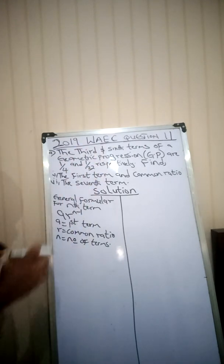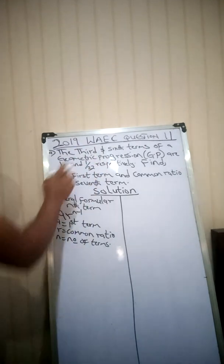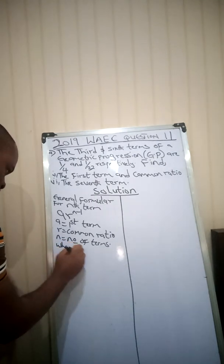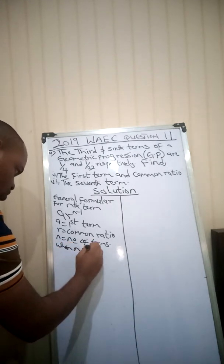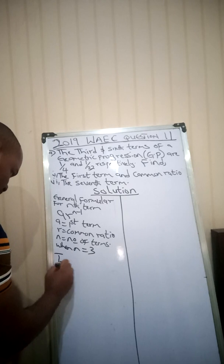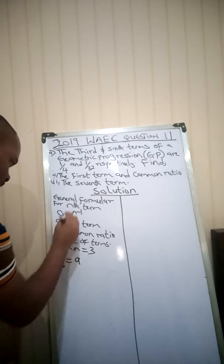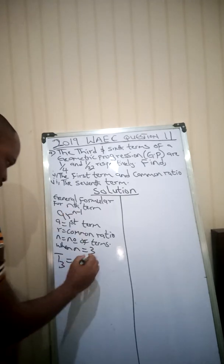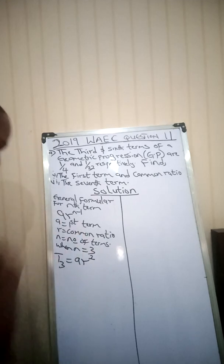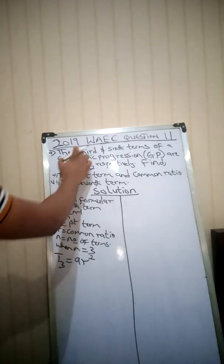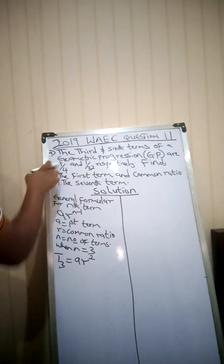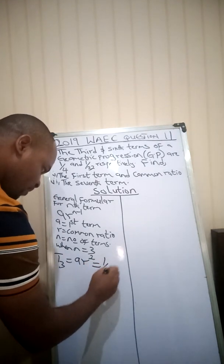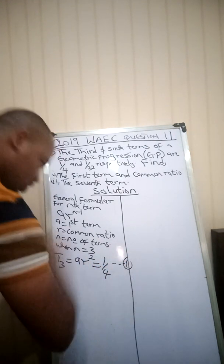The question says the third term, so n is 3. When n equals 3, T3 = ar^(3-1) = ar². The third term is 1/4, so ar² = 1/4. Let's call this equation 1.